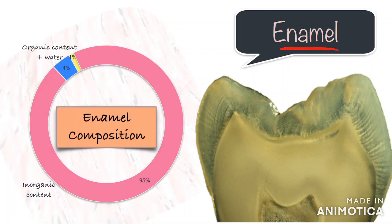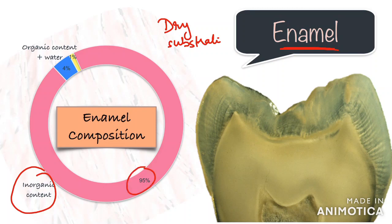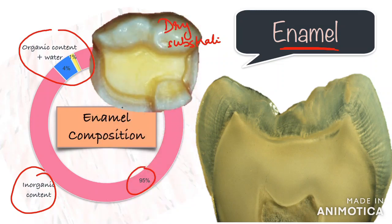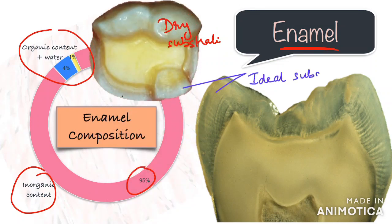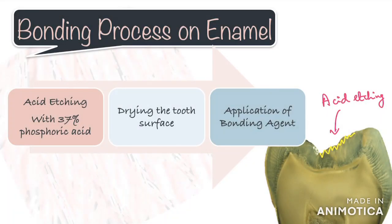We'll first start by understanding the structure of enamel. Enamel is a dry substrate without any vital structures. It contains almost 95 percent inorganic matter, which is hydroxyapatite, and a small amount of organic matter and water. Because of this particular composition, enamel is considered to be the most ideal substrate for bonding and it forms a tight adhesive joint — more enamel, better is the bond.